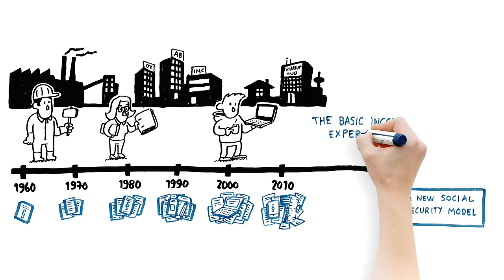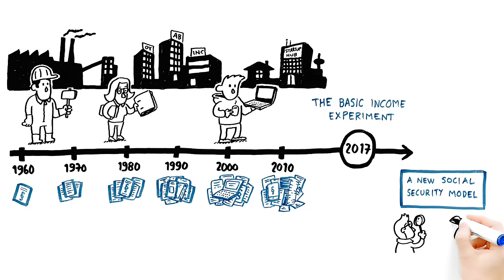A unique basic income experiment was launched in Finland in 2017. The aim of the experiment is to determine whether the social security system can be simplified and provide a stronger incentive for finding employment.